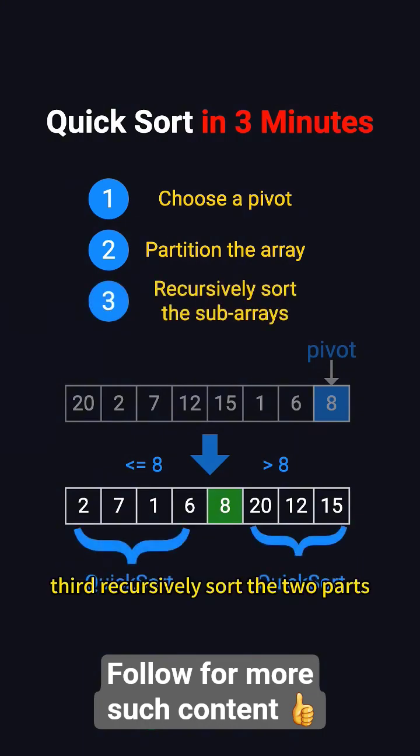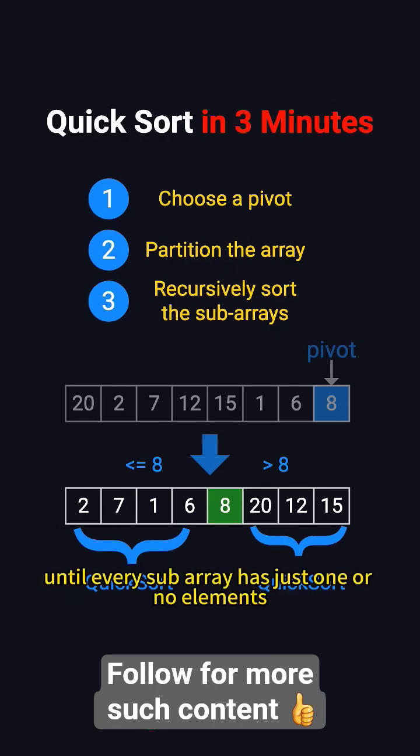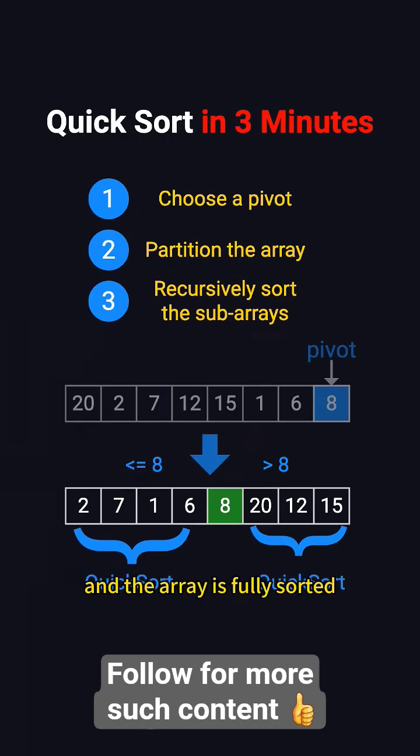Third, recursively sort the two parts. Repeat this process for each part until every subarray has just one or no elements, and the array is fully sorted.